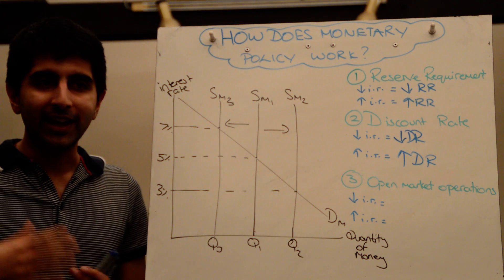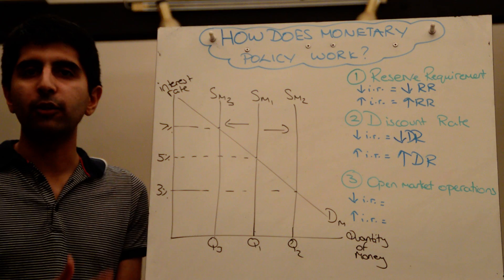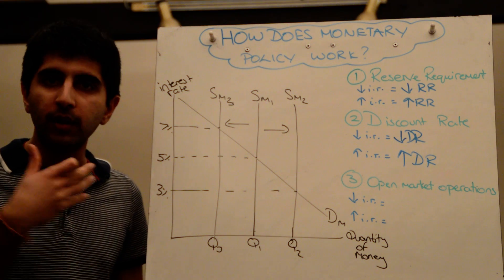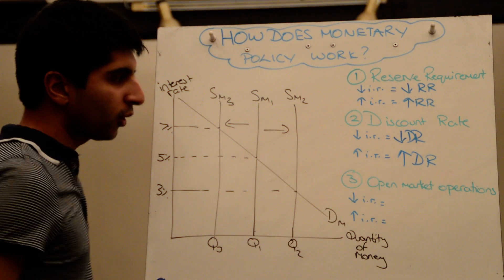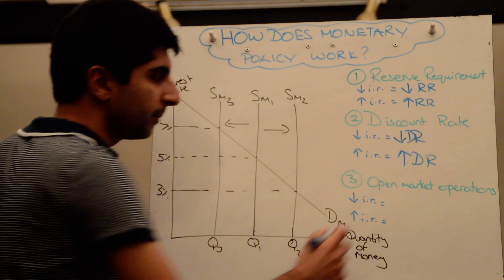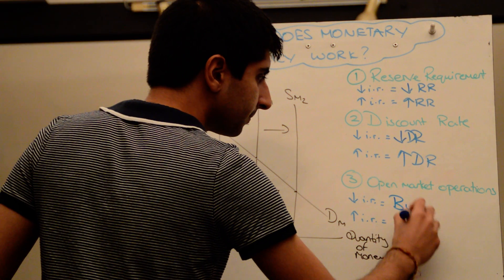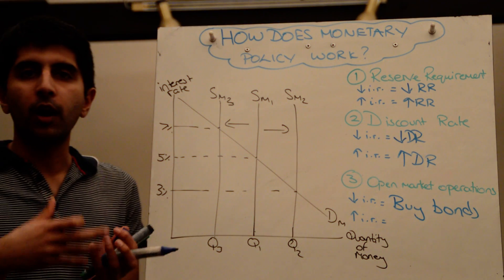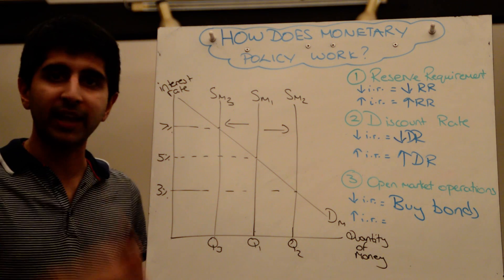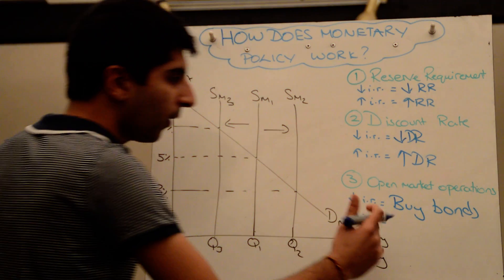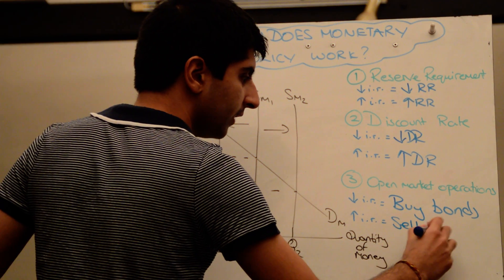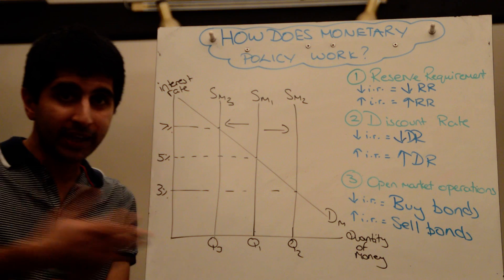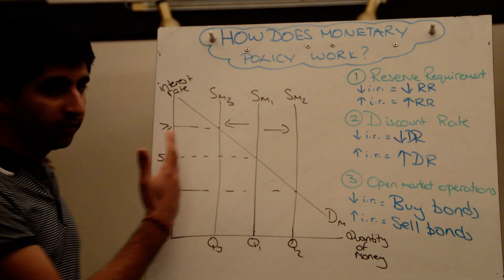Whereas if they wanted to increase interest rates, they could actually sell bonds themselves — so where commercial banks were holding cash, the central bank can take some of that cash and replace it with bonds, IOUs. So for open market operations: to reduce interest rates, the central bank could buy government bonds, taking away pieces of paper from commercial banks and replacing them with cash, which increases the supply of money and reduces the interest rate. Or if they wanted to increase the interest rate, the central bank could sell bonds to commercial banks, taking away cash from the economy and replacing it with paper IOUs, which reduces the supply of money.